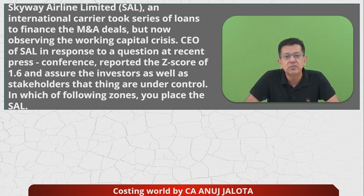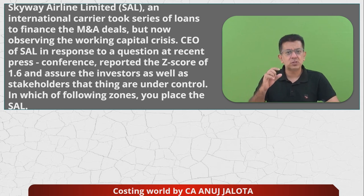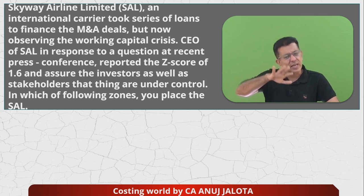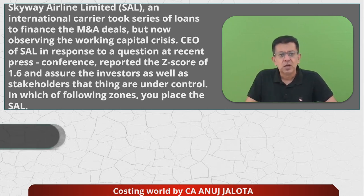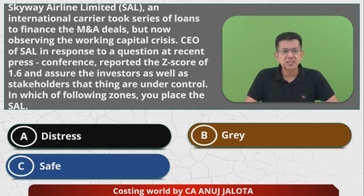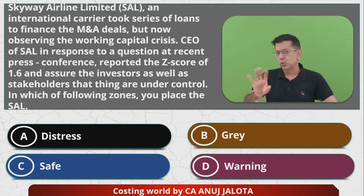The Z score gives you an approximation of whether you are heading towards bankruptcy or not. There are three kinds of scores you might fall into: distress, grey area, or safe. There is no zone called a warning zone.